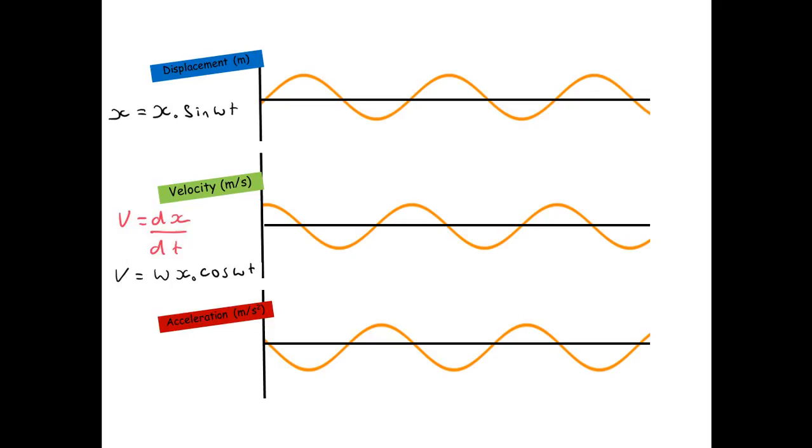And then finally at the bottom we've got acceleration in meters per second per second and if I differentiate velocity with respect to t I'm going to get a equals minus omega squared x0 sine omega t which we saw in part 1.